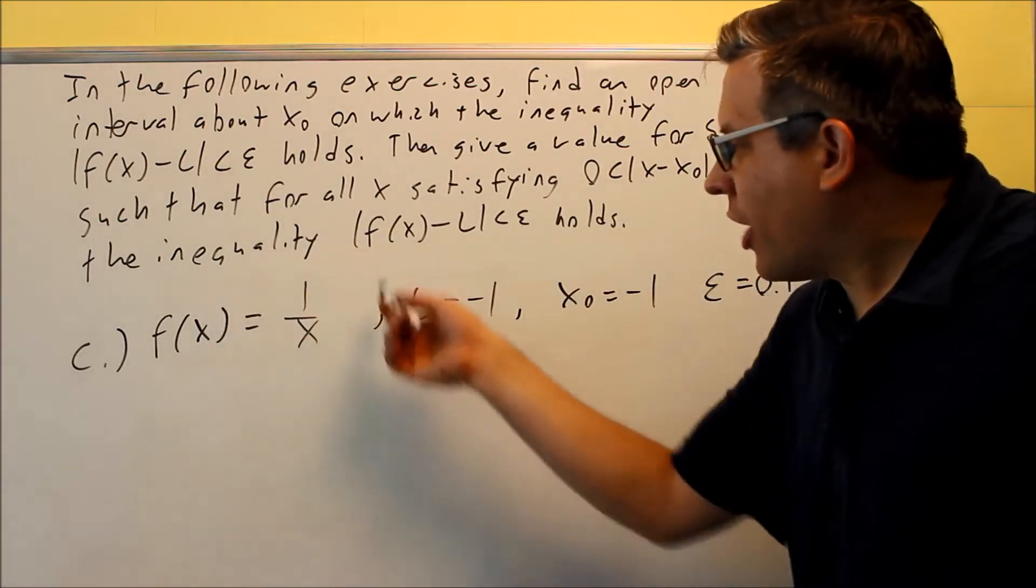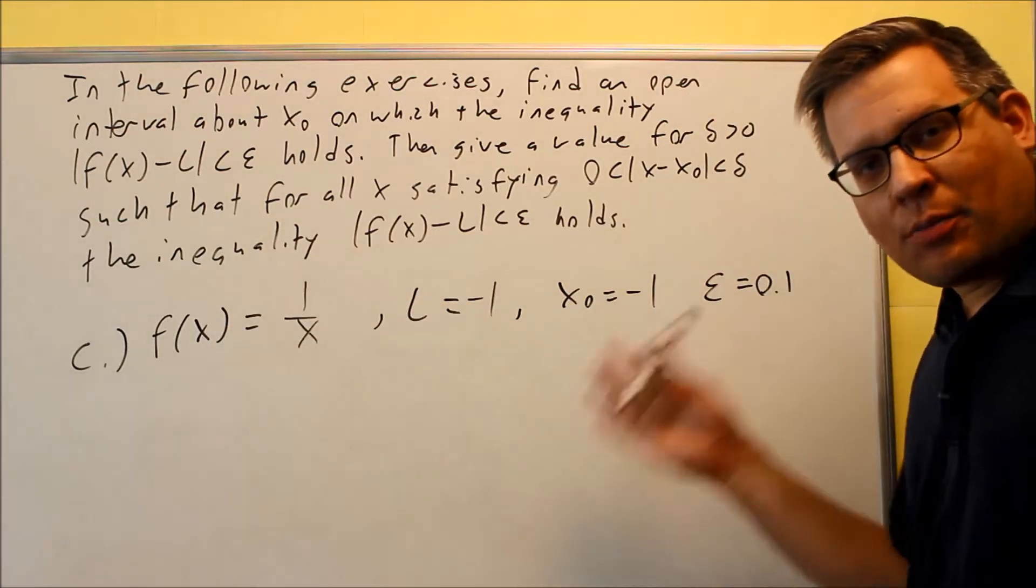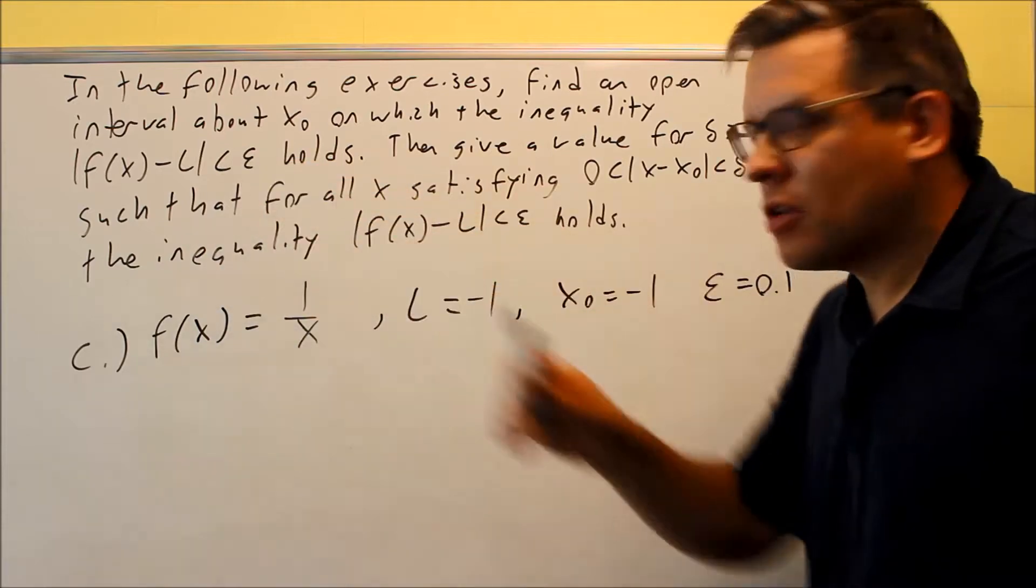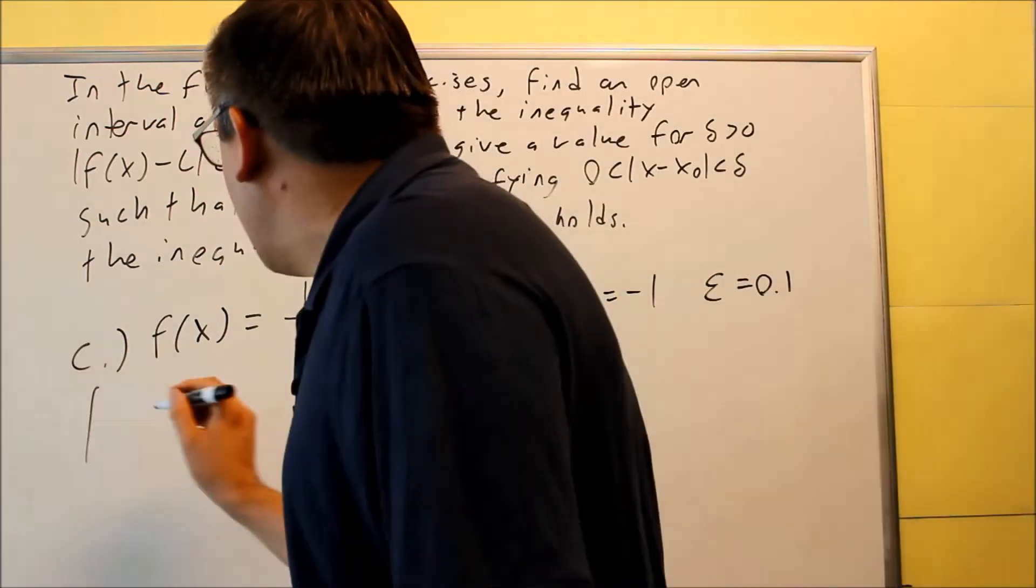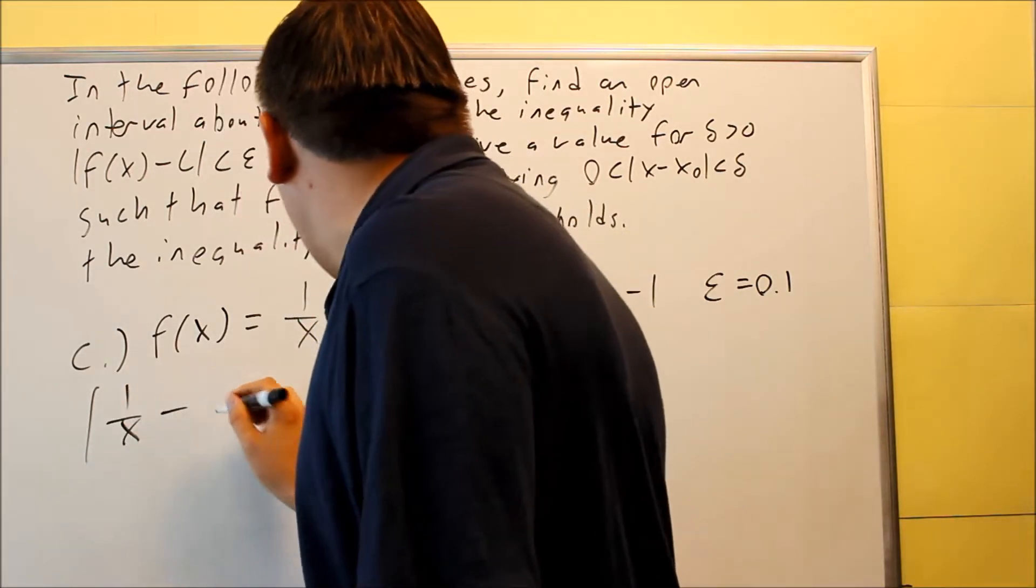Okay, for part c, this time we have a fraction for our f of x, but again, the process is still the same. We're going to set up the first initial inequality. So we're going to do the absolute value, f of x is 1 over x,